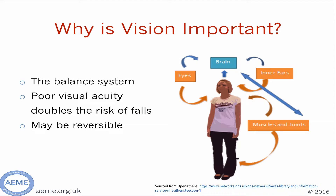Vision is an extremely important part of the balance system, along with the inner ears, the muscles and joints, all interacting with the brain. In the elderly, it is likely that all three of these components may be compromised in some way, and poor visual acuity has been shown in papers to double the risk of falls. Importantly, this can be reversible, and if there is a reversible cause, it should be identified and treated.